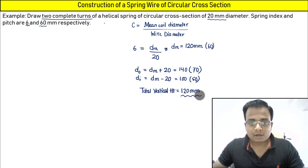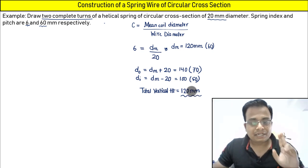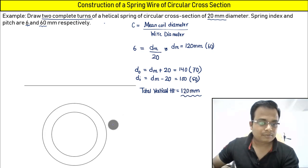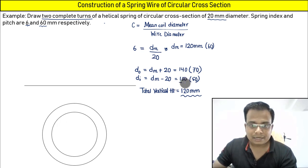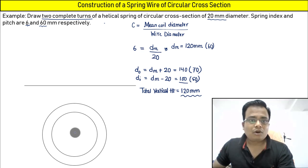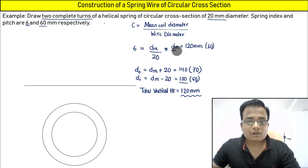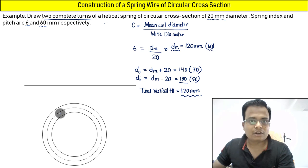The top view of a helical spring with circular cross section consists of two concentric circles. The inner diameter is 100 mm and the outer diameter is 140 mm, sharing the same center. With the same center, draw another circle for the mean diameter of 120 mm — that is, radius 60 mm. This mean diameter circle is represented with a dash-dot line.